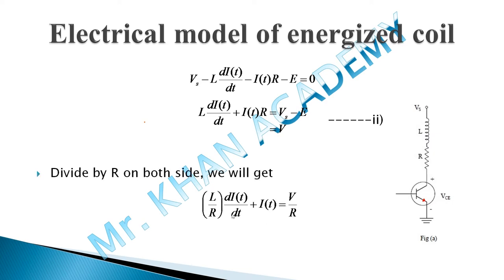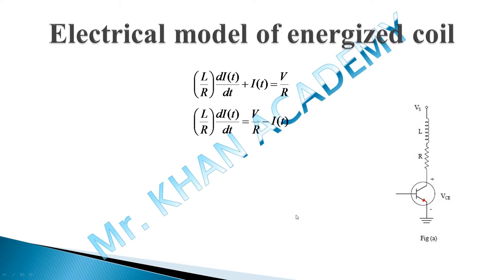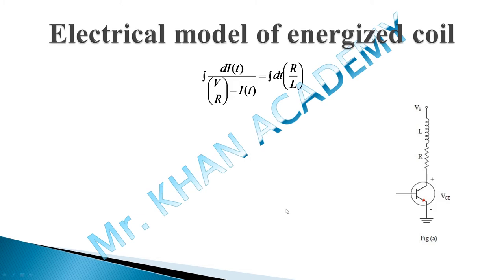Dividing both sides by R gives: (L/R)(di/dt) + I = V/R. Rearranging: (L/R)(di/dt) = V/R − I. To prepare for integration, we write: di/(V/R − I) = (R/L)·dt. Integrating both sides — using the identity ∫(1/x)dx = ln(x) — gives: −ln(V/R − I) + C = (R/L)·T, where C is the integration constant.